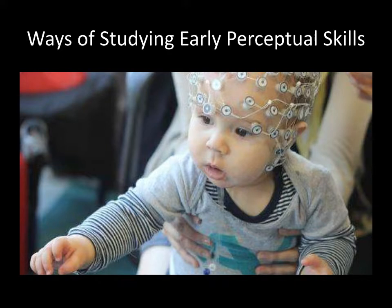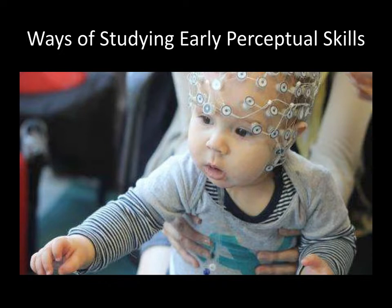How do we answer the nature and nurture questions related to sensation and perception? Who do we study, and what methods do we use? Researchers tend to study babies. There are three basic methods. The first is the preference technique, where researchers determine whether babies shown the same pair of pictures consistently look longer at one versus another. This indicates whether babies notice differences between two pictures and whether certain objects or pictures capture a baby's attention more than others.